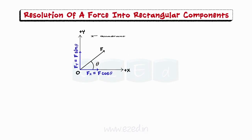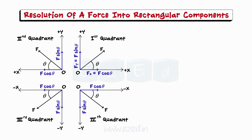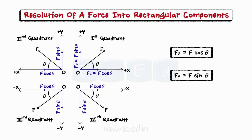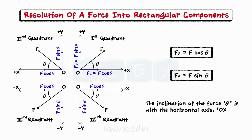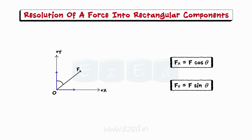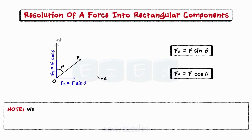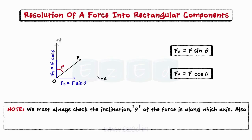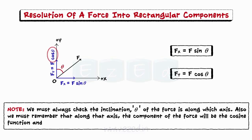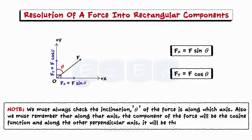The above force can also be resolved for the different quadrants as shown. Fx equals F cos theta and Fy equals F sine theta are the components of force F along the x-axis and y-axis respectively. In all the above cases, the inclination of the force theta is with the horizontal axis. But if we consider the inclination with the vertical axis, the components will change as shown. We must always check which axis the inclination of the force is along — along that axis the component will be the cosine function, and along the other perpendicular axis it will be the sine function.